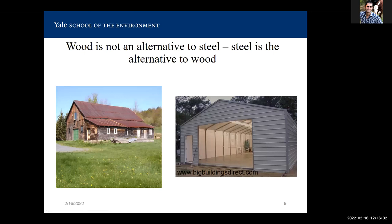Wood is not the alternative to steel — wood has been around a long time. Here's my old barn in Northern New York, probably built in the 1860s or 1870s, originally with a wood roof. Steel is the alternative to wood. We are using a non-renewable, fossil fuel-intensive product to replace what was most commonly used — wood — which is a renewable and carbon-friendly product. Let's make sure we're talking about that appropriately.